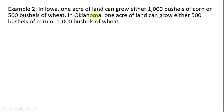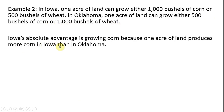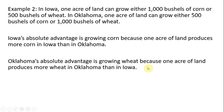In Iowa, one acre of land can grow either 1,000 bushels of corn or 500 bushels of wheat. In Oklahoma, one acre of land can grow either 500 bushels of corn or 1,000 bushels of wheat. Iowa's absolute advantage is growing corn because one acre of land produces more corn in Iowa than in Oklahoma. Oklahoma's absolute advantage is growing wheat because one acre of land produces more wheat in Oklahoma than in Iowa.